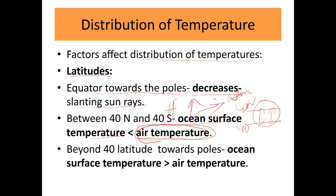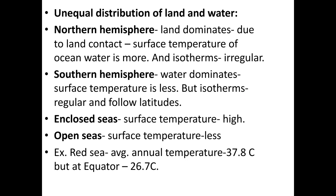Because of greater heat loss in the tropics, ocean surface temperature is less than air temperature in that region. Beyond 40 degrees latitude towards the poles, the ocean surface temperature is lower, so heat loss to the atmosphere is also less, meaning ocean surface temperature is relatively more and air temperature is less. Unequal distribution of land and water also affects ocean temperatures.